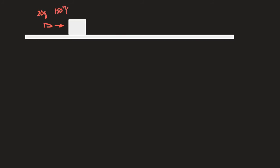You have a bullet — maybe 20 grams — fired at 150 meters per second, striking a block of wood that is 1 kilogram. Without knowing what happens during the collision, there are too many unknowns. Let's assume the bullet passes through the block of wood. Using conservation of momentum: 0.02 kg times 150 equals 0.02 times V_projectile plus 1 kilogram times V_block. In a standard inelastic collision, you can't solve this because you don't know either velocity.